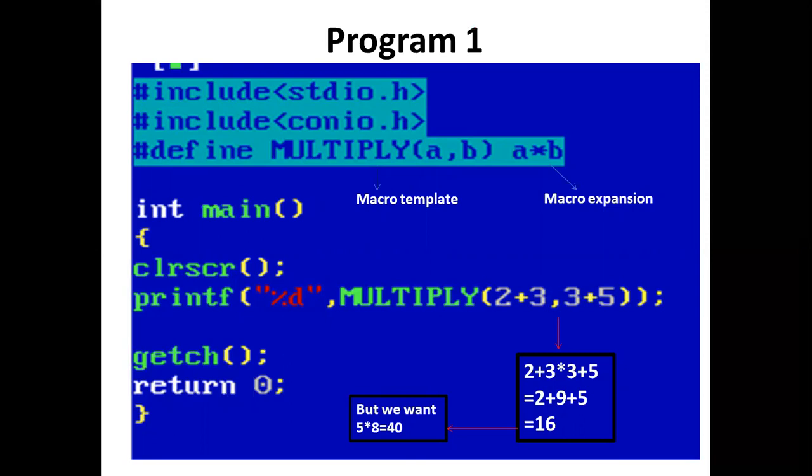The macro is expanded as 2+3*3+5, which equals 16. Our program ends here, but the multiplication result is not accurate because we have not used parentheses in the expansion.